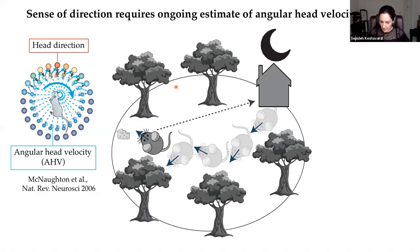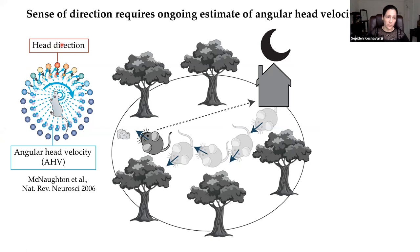To start with, the sense of direction requires, on one hand, an accurate estimation of momentary heading direction, which is thought to be represented by head direction cells, but also, on the other hand, the ability to update this with subsequent head movements as the animal moves within the environment. It is well established that this updating requires the integration of angular head velocity, or AHV, signals.